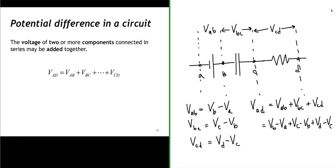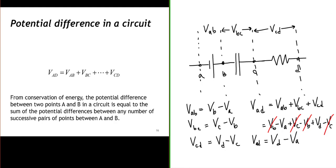Notice what cancels: the potential at point B cancels, and we end up with the potential from A to D equal to just the difference in potential between the right end and the left end of this series combination. This comes from conservation of energy, which tells us the potential difference between two points equals the sum of potential differences between any successive pairs of points between them.